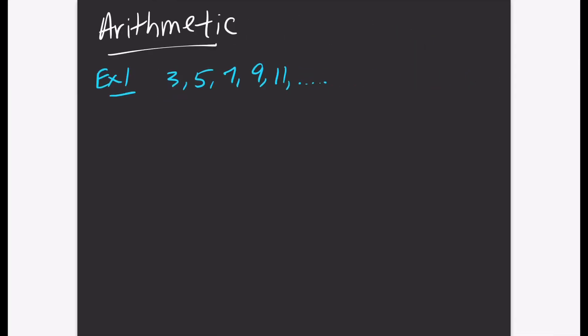Let's start with an arithmetic sequence. You have to find the pattern. Notice that the first term here is 3 — you call that a sub 1. The second term is 5, that's a sub 2. The third term is 7, and so forth.